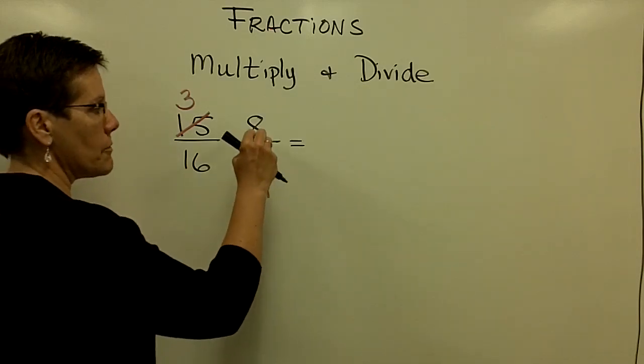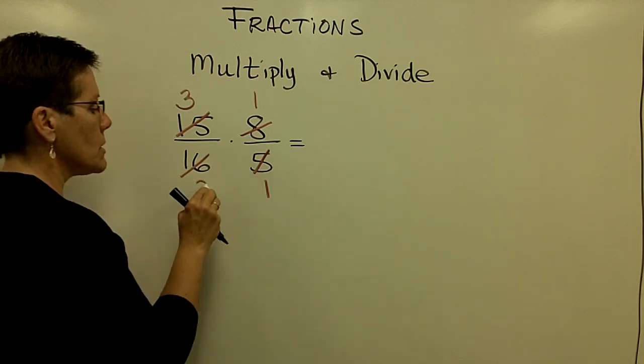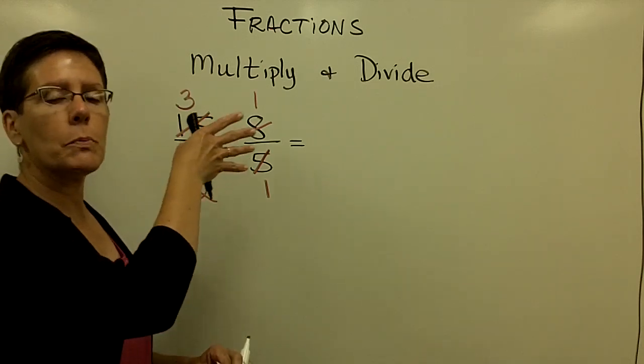So try to find the greatest common factor that goes into each. So an eight goes into here once, and an eight goes into sixteen twice. And when you multiply fractions, all you do is you multiply straight across.